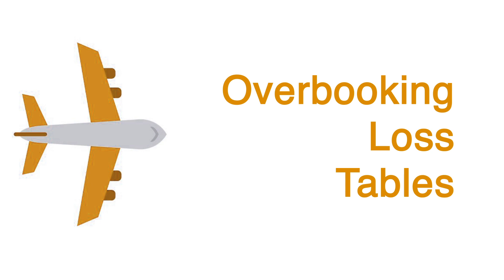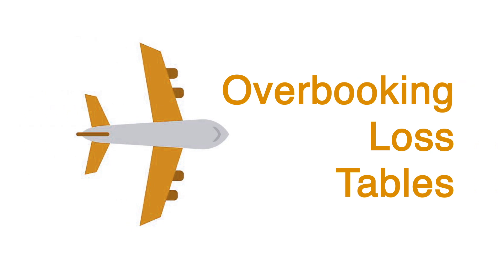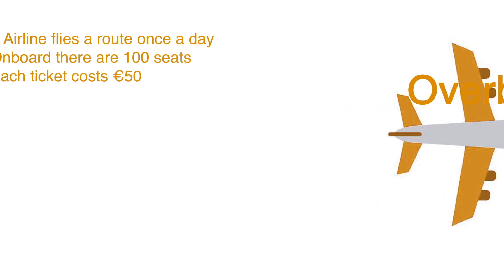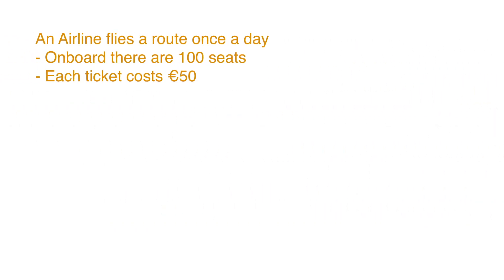We want to do an example of an overbooking loss table. Take the following scenario: I've got an airline that flies to a destination every day. On that airline they may have a number of seats, and each seat goes for 50 euro — that is the ticket price.